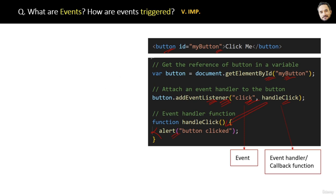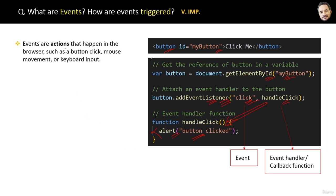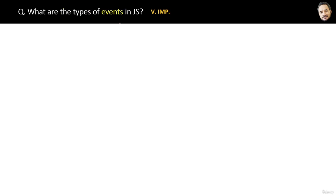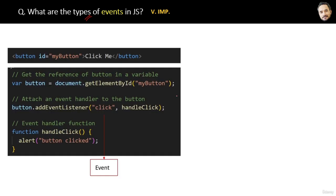When the button is pressed, the click event will be fired, which will run the handleClick event handler. The definition of an event is: events are actions that happen in the browser, such as a button click, mouse movement, or keyboard input. This concept of events should now be fixed in your memory.